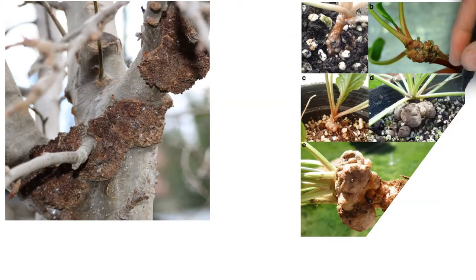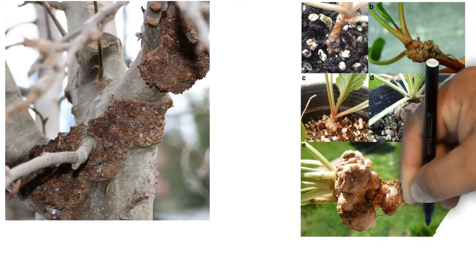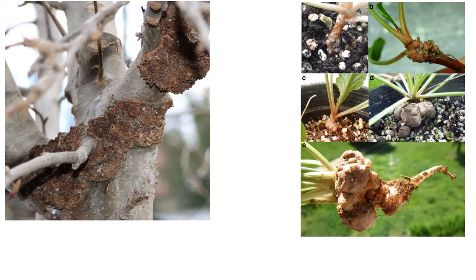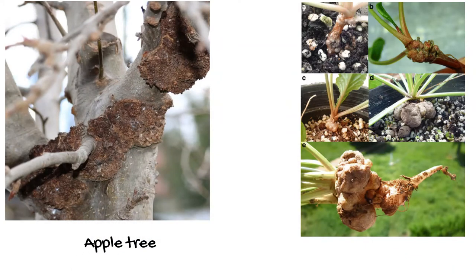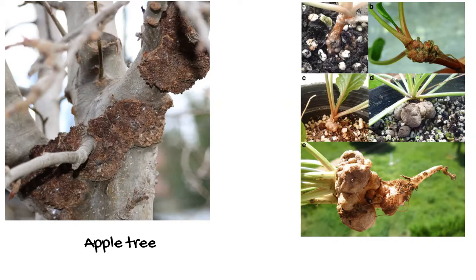So here you can see an apple tree. On the left side, there is a crown gall. You can see it in the brownish color. And on your right, you can see a beetroot plant. And here you can also observe the crown gall.